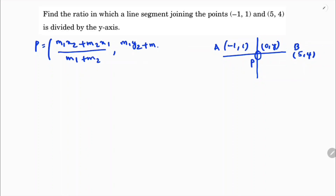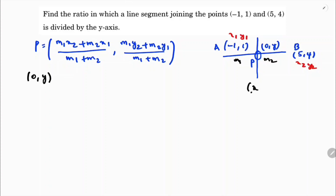And m1·y2 + m2·y1 by m1 + m2. Here x1, y1 are the first point and x2, y2 the second; take the ratio as k:1. Point P is (0, y) because it's on the y-axis. So: 0 = m1·x2 + m2·x1 / (m1 + m2), where x2 = 5 and x1 = -1.